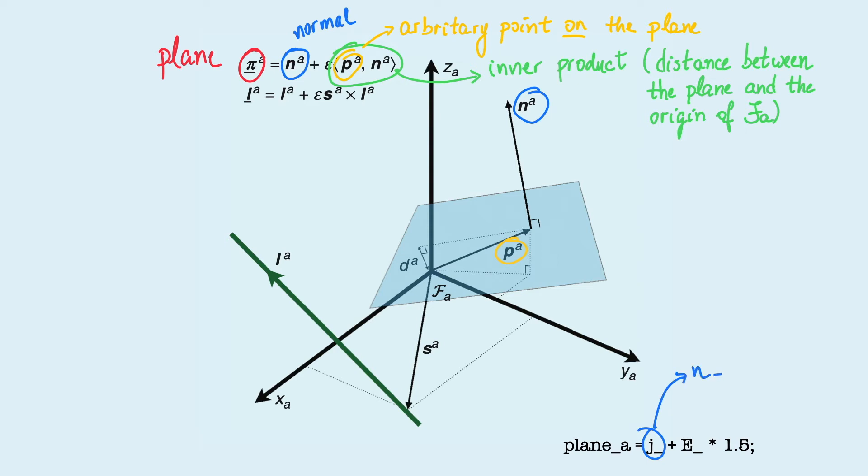For example, a plane with normal pointing in the positive direction of the y-axis and 1.5 units of distance to the origin of the reference frame is defined like this in Diki Robotics.